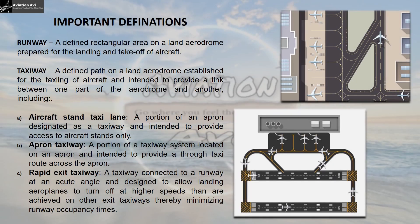Let us look at some important definitions. Number one is the runway. It is a defined rectangular area on land aerodrome prepared for the landing and takeoff of an aircraft. As you can see in the image here, this is a runway.